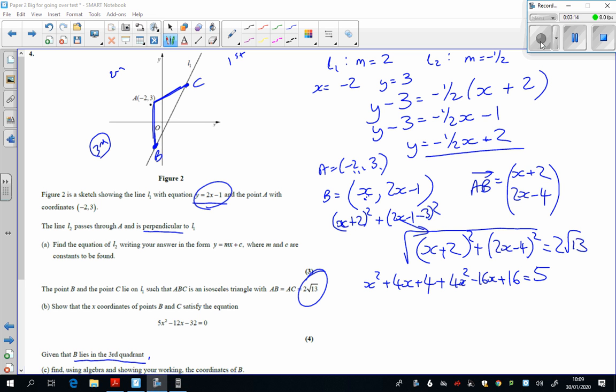So 4 times 13, I've got 52 here. And tidying up all the algebra, I've got 5X squared minus 12X minus 32 equals 0.